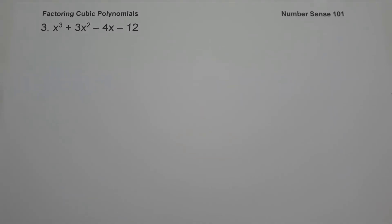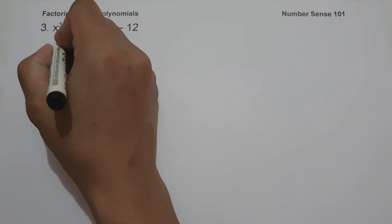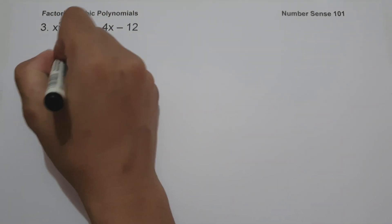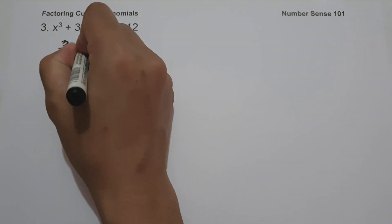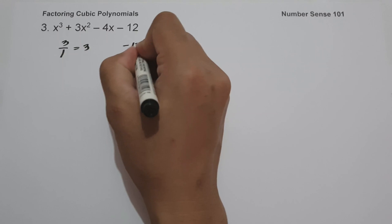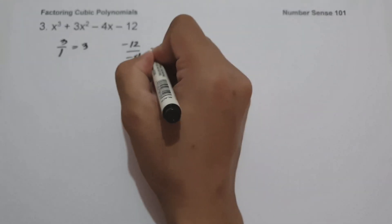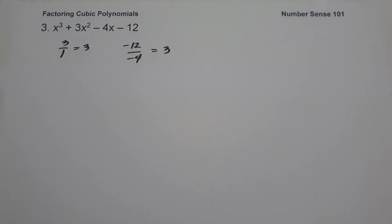On example number 3, we have x cubed plus 3x squared minus 4x minus 12. The first thing we're going to do is check if the first two coefficients have the same ratio with the last two coefficients. 3 divided by 1 is 3, and negative 12 divided by negative 4 is also 3. Since we have the same ratio, we can solve this one using factoring by grouping.